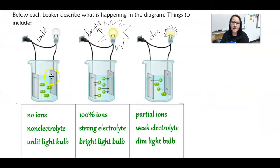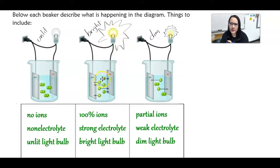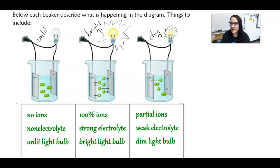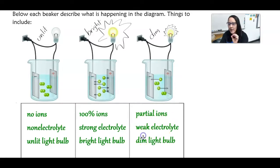Let's consider each of the beakers in this diagram. Notice this one — the light bulb is unlit. Inside the beaker, these are all molecular compounds with nothing having a positive or negative charge. So there are no ions, which makes this a non-electrolyte. If you have a brightly lit light bulb, look in the beaker — all ions, everything's a positive or negative ion, 100% ions. It's a strong electrolyte. If you have a dimly lit light bulb, we have a few ions — not 100%, but some. Everything else is a molecular compound. So if you only have partial ions, you have a weak electrolyte and a dim light bulb.